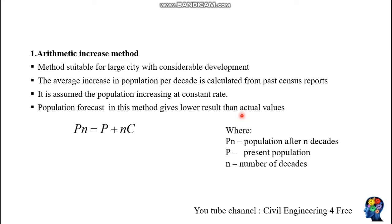There are algebraic methods and graphical methods. We will discuss the algebraic methods in this session. The first method is the arithmetic increase method. This method is suitable for the largest cities that have considerable development, and the rate of population increase with time is assumed to be constant — population is increasing at a constant rate. Population is forecasted for every decade, usually every 10 years.